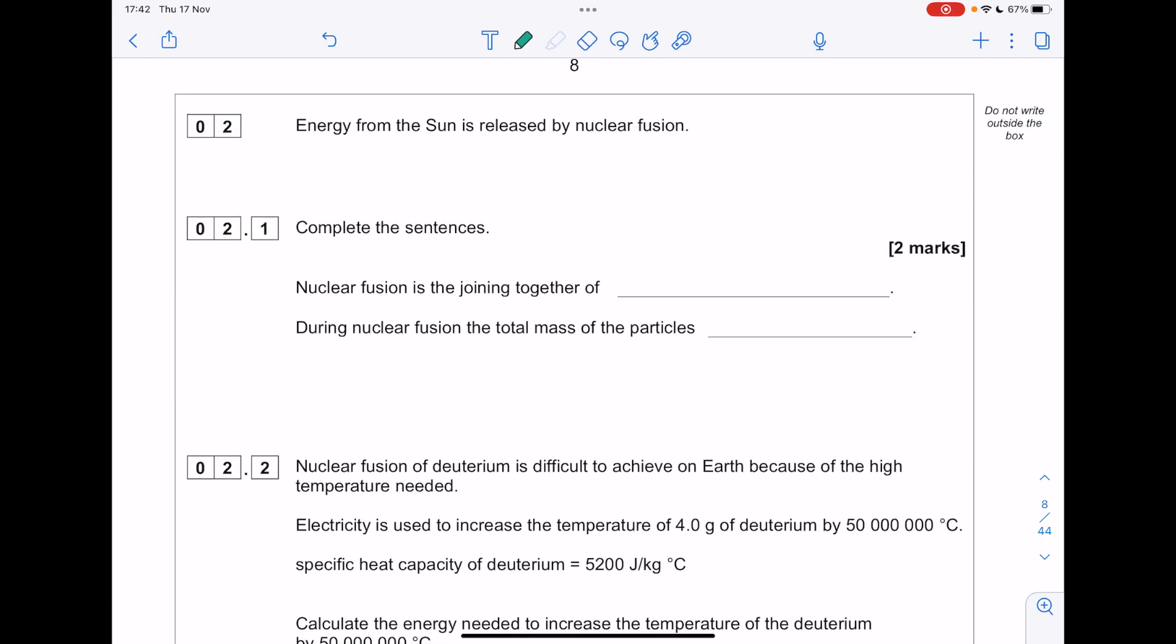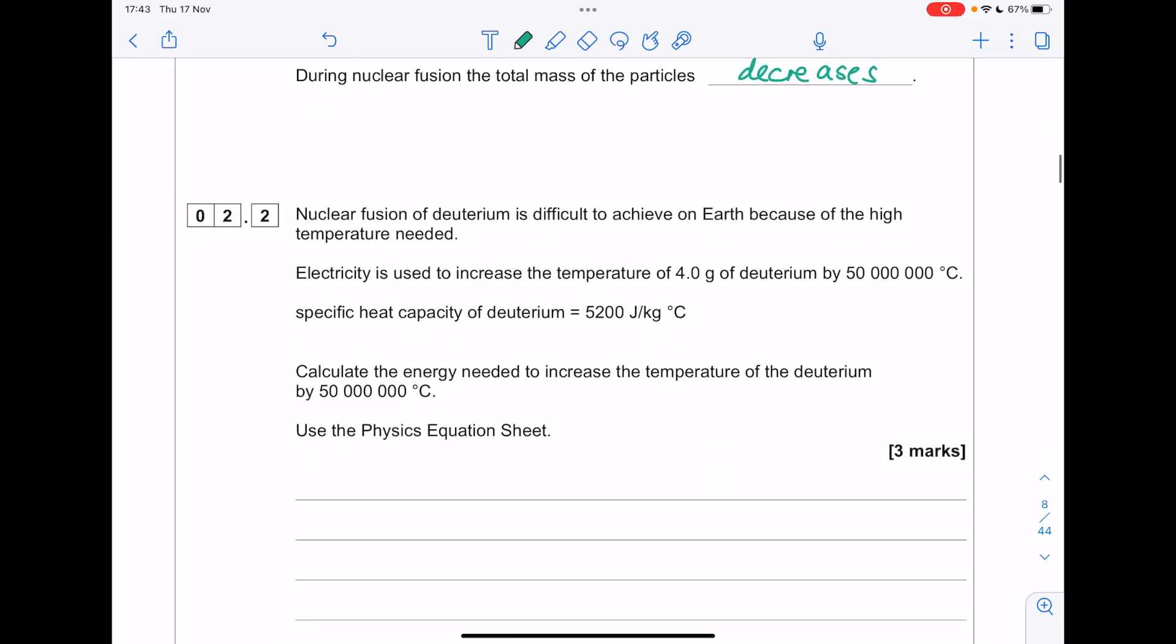Energy from the sun is released by nuclear fusion. Complete the sentences. Nuclear fusion is the joining together of... Remember, it's nuclei. During nuclear fusion, the total mass of the particles decreases. Remember, mass is always lost in nuclear fusion.